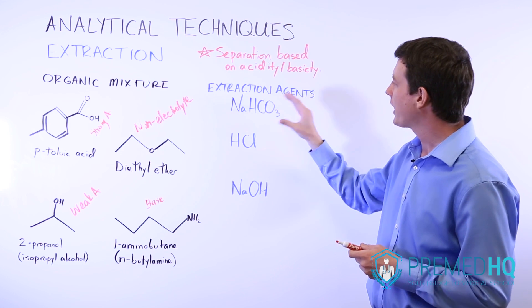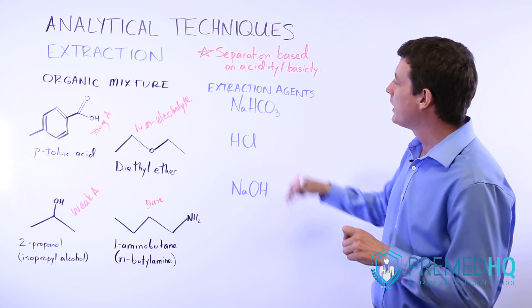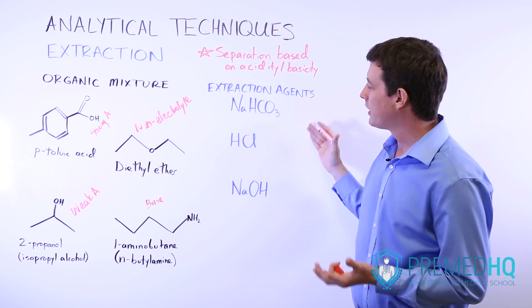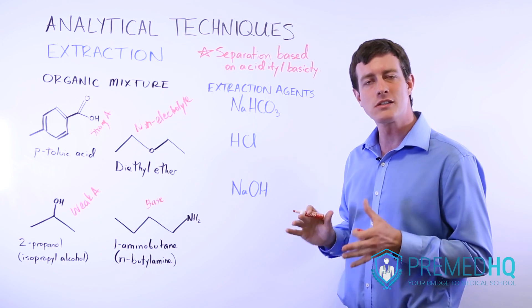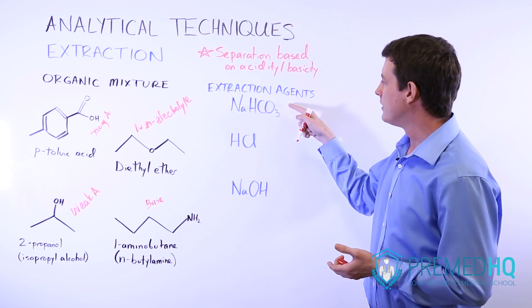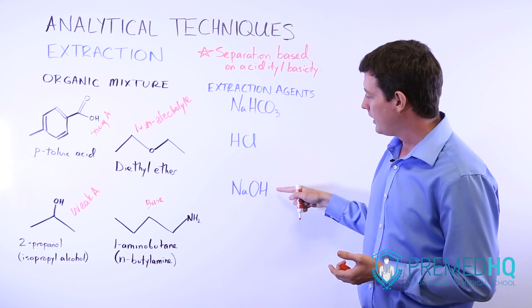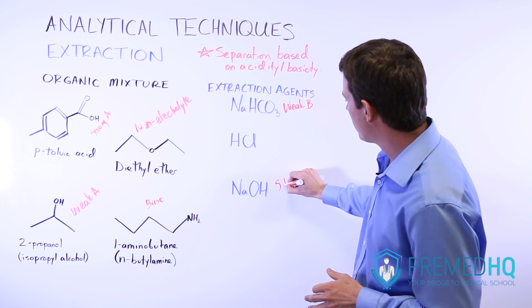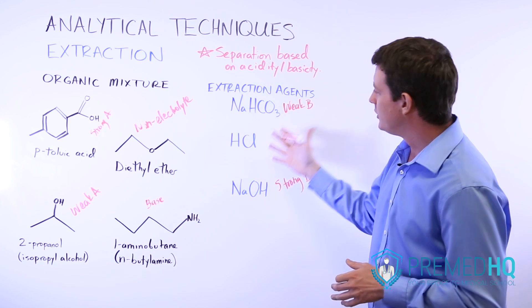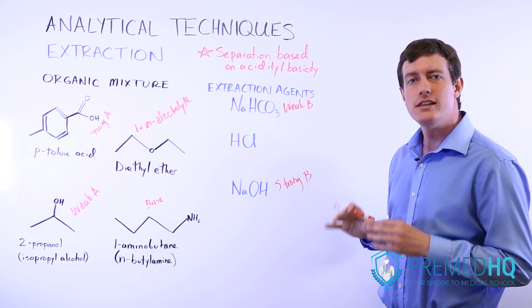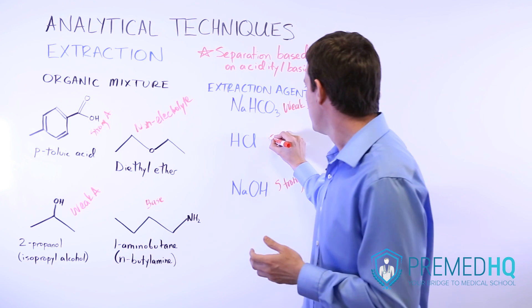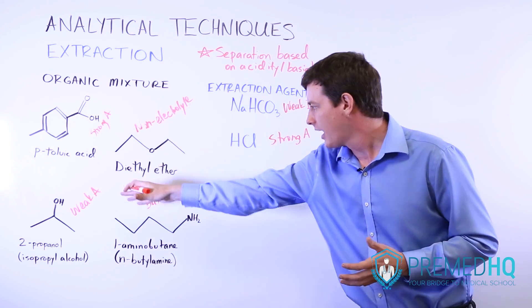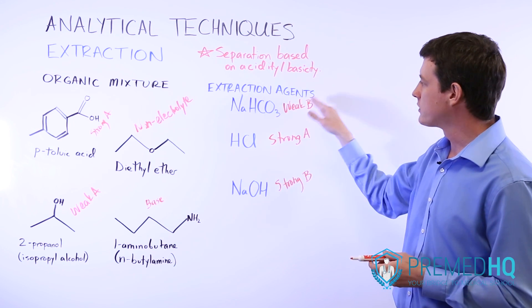Next we look at our extraction agents and figure out which one is which. We have sodium bicarbonate — recognizing that it is a weak base. We also have sodium hydroxide, which is a strong base, and that confirms our reasoning: sodium bicarbonate is the weak base and NaOH is the strong base. And hydrochloric acid, HCl, is one of our go-to strong acids. So we've now identified all extraction agents by their acid/base category.